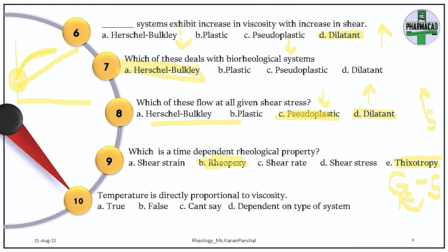Question 10. Is temperature directly proportional to viscosity? The answer is no — false. As temperature increases, viscosity will decrease. Fluidity, denoted as phi, will increase. But viscosity will decrease as you increase temperature. So it is not directly proportional — it is inversely proportional.